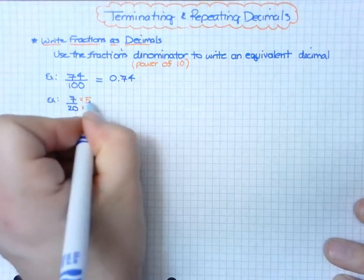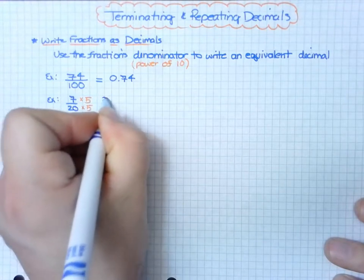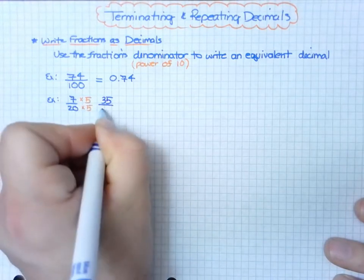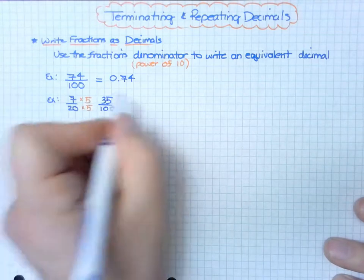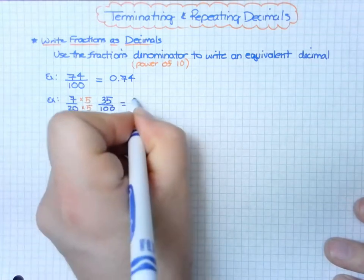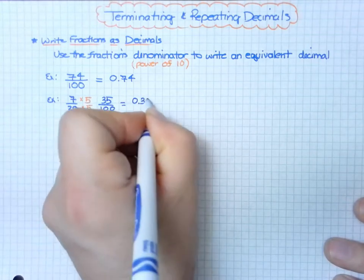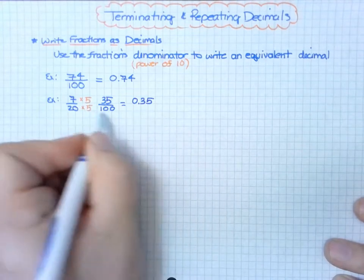7 times 5 is 35, and 20 times 5 is 100. Therefore, we have 35/100 or 0.35, which matches what I have here.